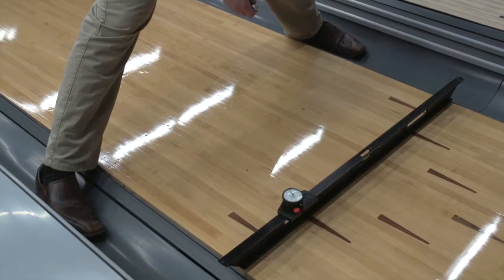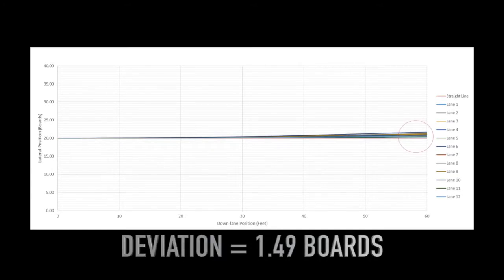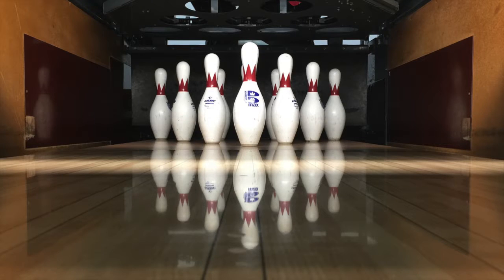But after the lanes were leveled for the 2015 US Open, the deviation decreased to just 1.49 boards. That nearly two board difference has a huge impact on the bowler, especially considering the pocket area at the pins is less than two boards wide.